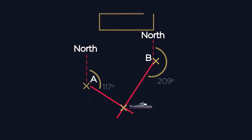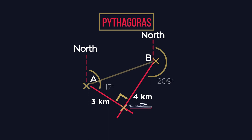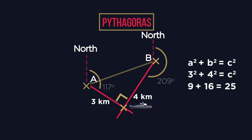We can also apply Pythagoras to this scenario. If we are told town A is three kilometres from the ship, B is four kilometres from the ship, and their bearings intersect perpendicularly, we can form a right-angled triangle. We can then use Pythagoras to determine the distance between the towns is five kilometres.